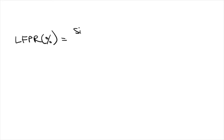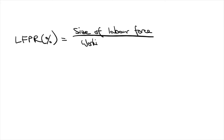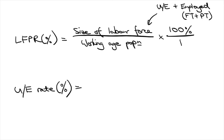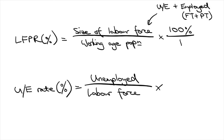Let's go through some mathematical definitions. Following from our definition of the labor force, the labor force participation rate is the size of the labor force as a proportion of the working age population, shown as a percentage. Keep in mind that the size of the labor force includes the unemployed and employed, both full-time and part-time. And the unemployment rate is the number of unemployed as a proportion of the labor force, also shown as a percentage.